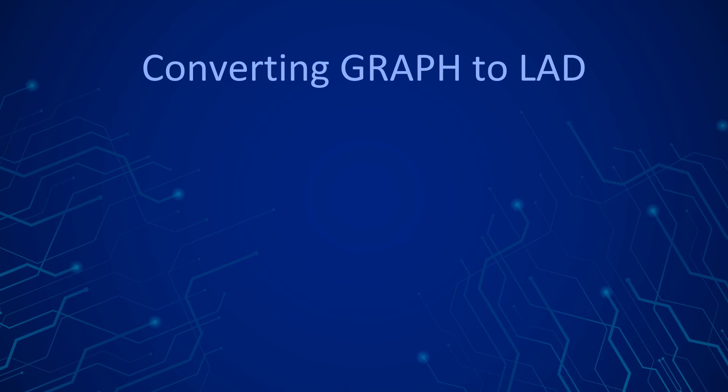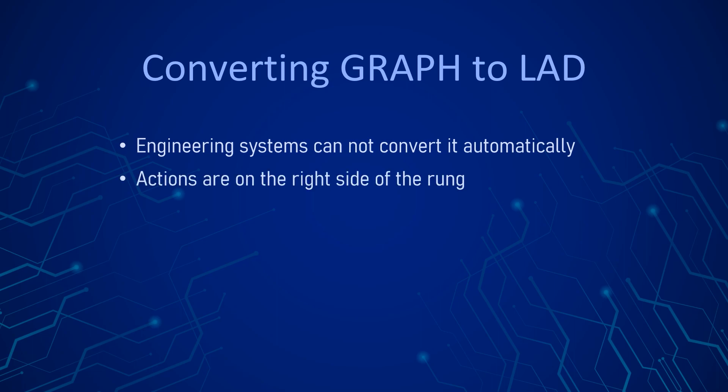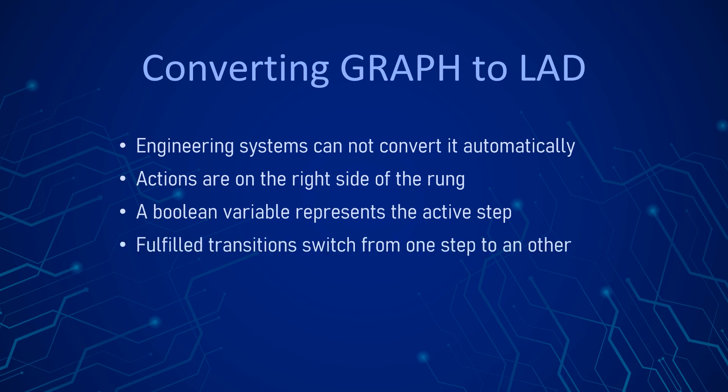To reminisce, a graph program consists of steps where you execute your actions, and transitions that lead us to the next step. The actions inside a step are represented on the right end of the rung. We have a boolean variable named as the following step that will lead us to the next step. Of course you can name it to anything, but it is practical to use reasonable variable names. This boolean variable is set when the transition's condition is fulfilled. Since the transitions in a graph can only be programmed in ladder logic or in function block diagram, this is just a copy and paste — plus the actual step's contactor must be true. It is needed to make only the active step's transition be monitored.